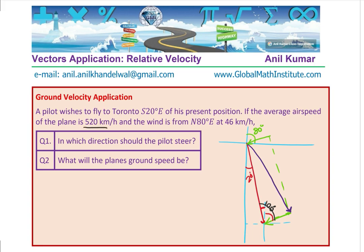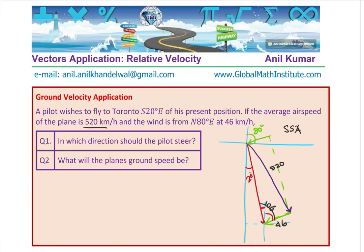The plane is traveling at 520 kilometers per hour and the wind is 46 kilometers per hour. You have a triangle in which we are given two sides and an angle. Since you have a combination of side and angle, you can apply the sine law.